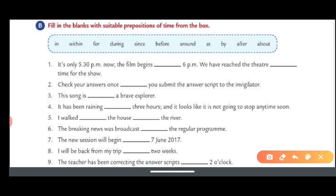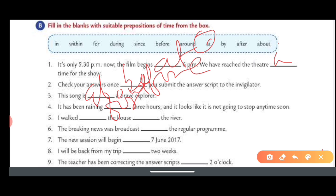Part B: Total number of questions are nine. Fill in the blank with suitable prepositions of time from the box. It's only 5 PM now. The film begins at 6 PM. At is correct. We reached theater in time, and the time. Before: Check your answers once before you submit. This song is about a brave explorer. About is correct. It has been raining for three hours. For is correct. I walked around the house by the river. Around and by.